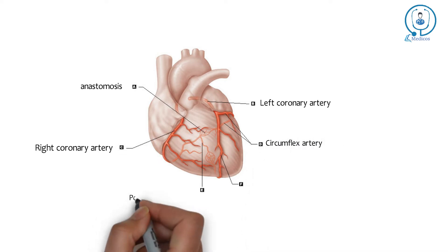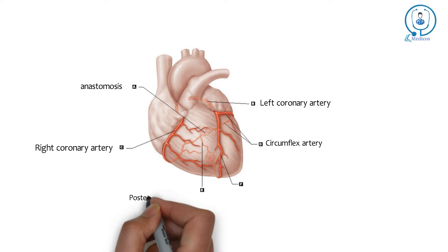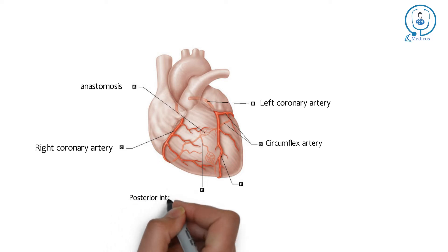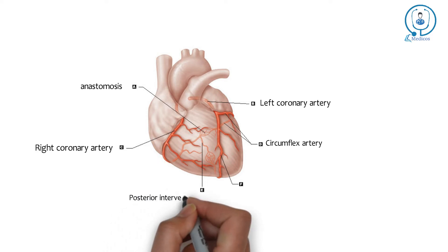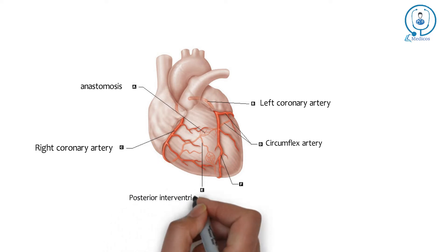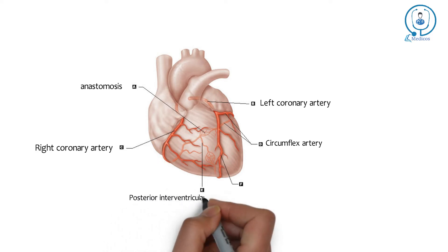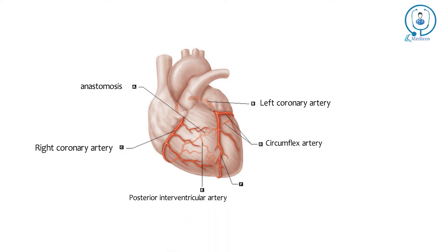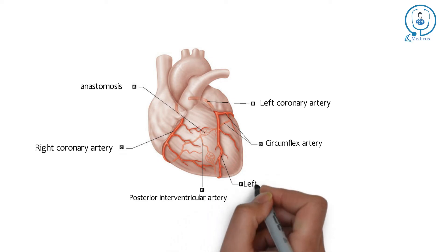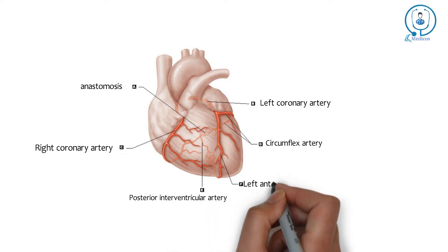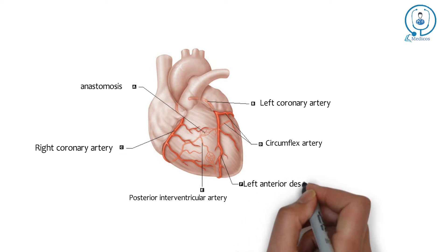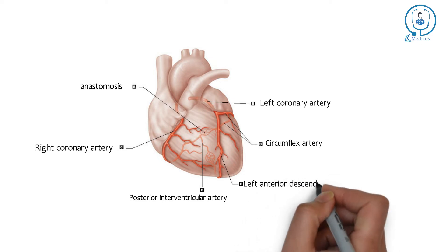What about E? Any guesses? This is the posterior interventricular artery. And what about F? This is the left anterior descending artery. So these are the structures of this diagram.